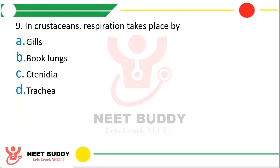Question nineteen: in crustaceans, respiration takes place by — option A, gills; option B, book lungs; option C, tracheae; or option D, trachea? The correct answer is option A, that is through gills.